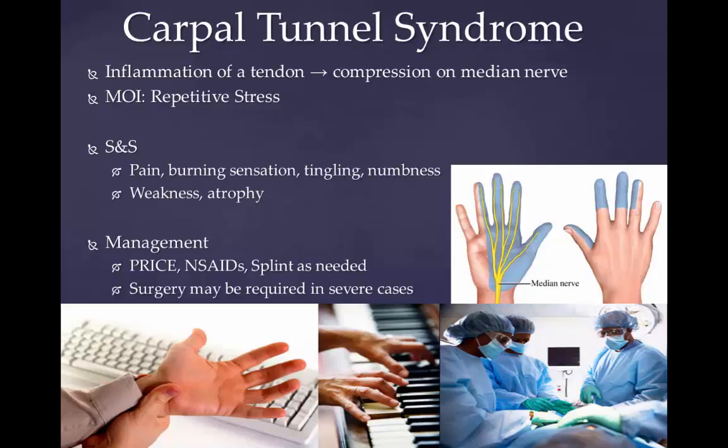Most cases of carpal tunnel syndrome have an unknown cause, but it can be associated with any condition that causes pressure on the median nerve at the wrist. Patients experience numbness, tingling, and burning sensations in the thumb and fingers — particularly the index and middle finger and the radial half of the ring finger — as they receive sensory and motor function from the median nerve. Ache and discomfort can also be felt more proximally in the forearm and upper arm. Numbness and paresthesia in the median nerve distribution are the hallmark neuropathic symptoms. Discomfort is usually worse at night and in the morning.